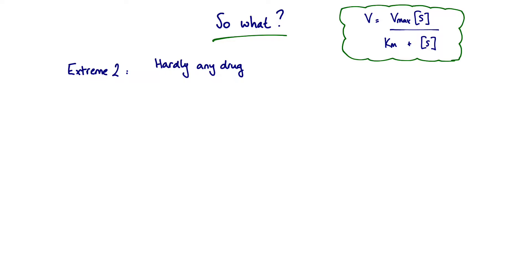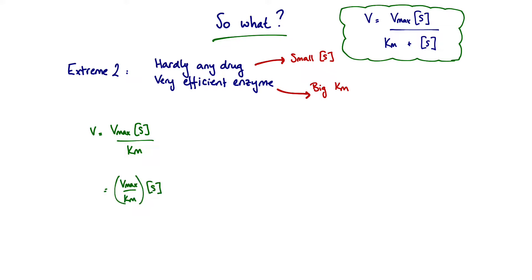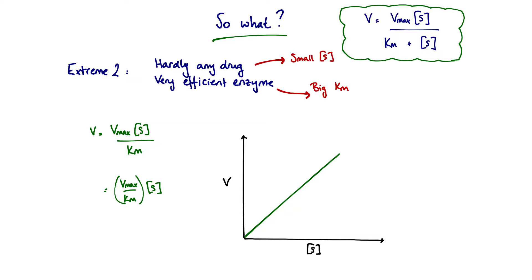Moving to the other extreme: we have hardly any drug on board — low plasma drug concentrations — and a very efficient enzyme system. In Michaelis-Menten notation that gives us a small S and a big Km. Using the same argument, the term Km + S now approximates to just Km. The constants Vmax and Km can be factored into one bracket, but substrate concentration S remains a variable, so the velocity or rate of reaction plotted as a function of substrate concentration now becomes a diagonal line — a proportional change in velocity with change in substrate concentration.